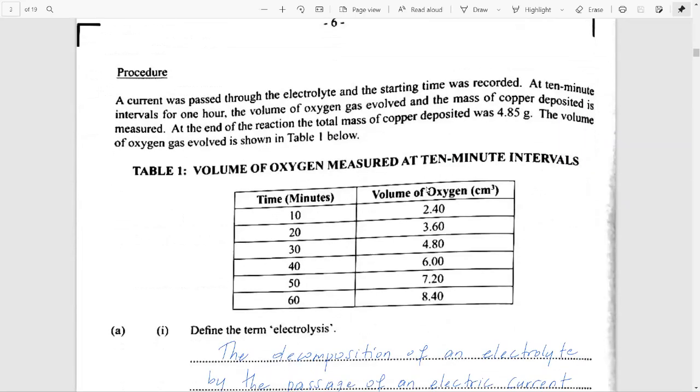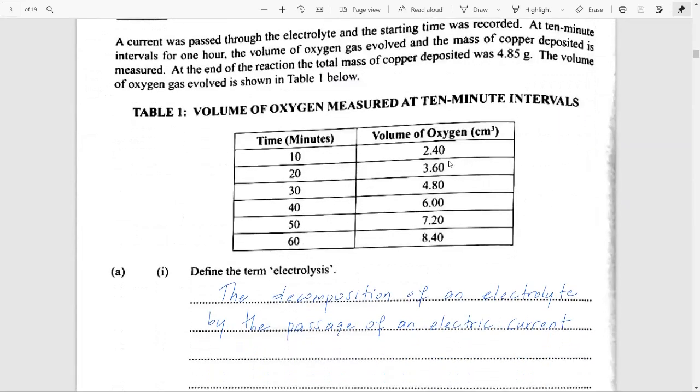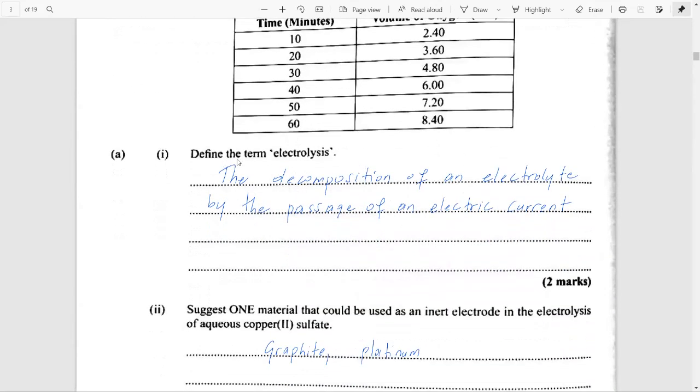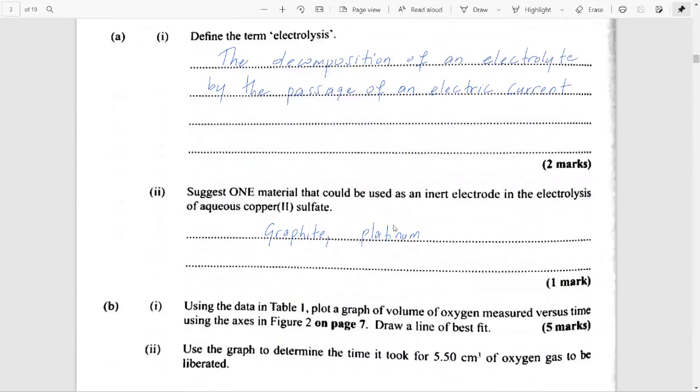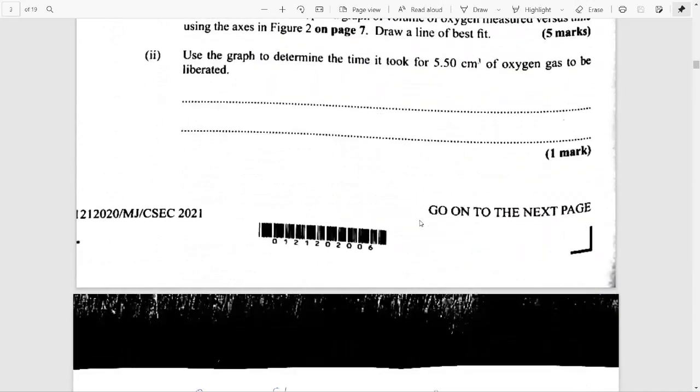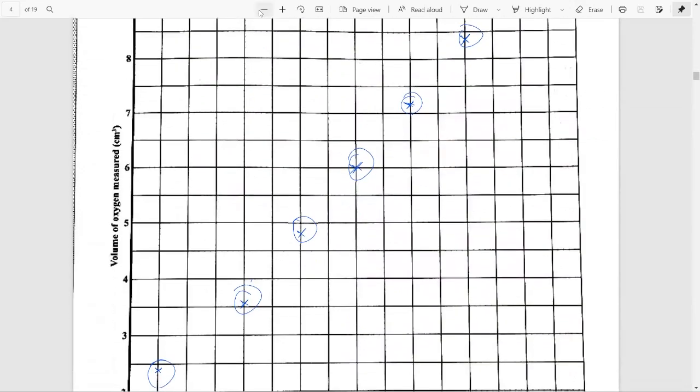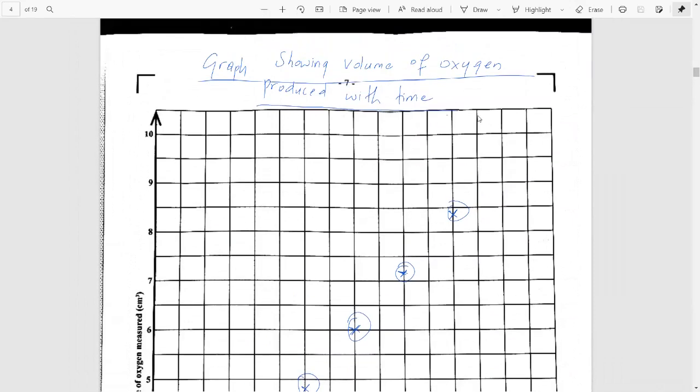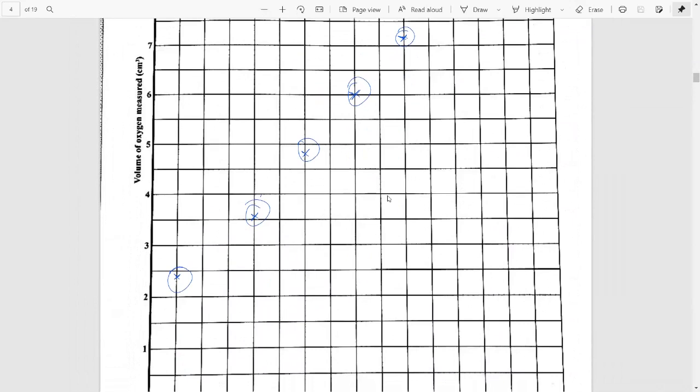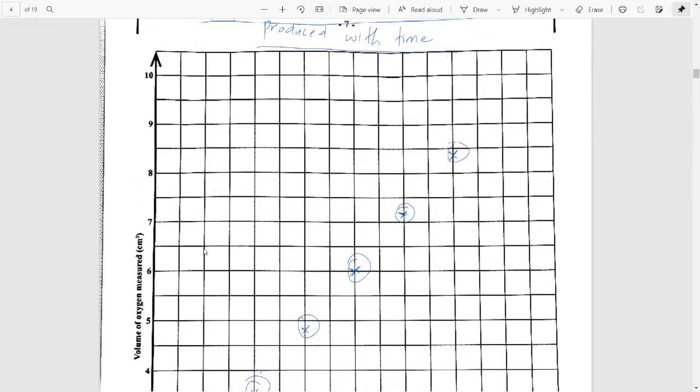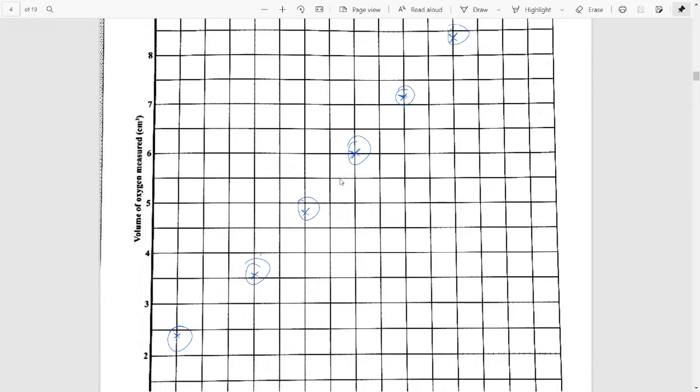So you were asked to plot a graph of the volume of oxygen formed with time. And you would expect oxygen to be formed as the hydroxide ions would be discharged at the anode. You were then asked to define electrolysis and give examples of what you could use as electrodes. And then you were to have given a good plot of the points. I did a rough plot here.